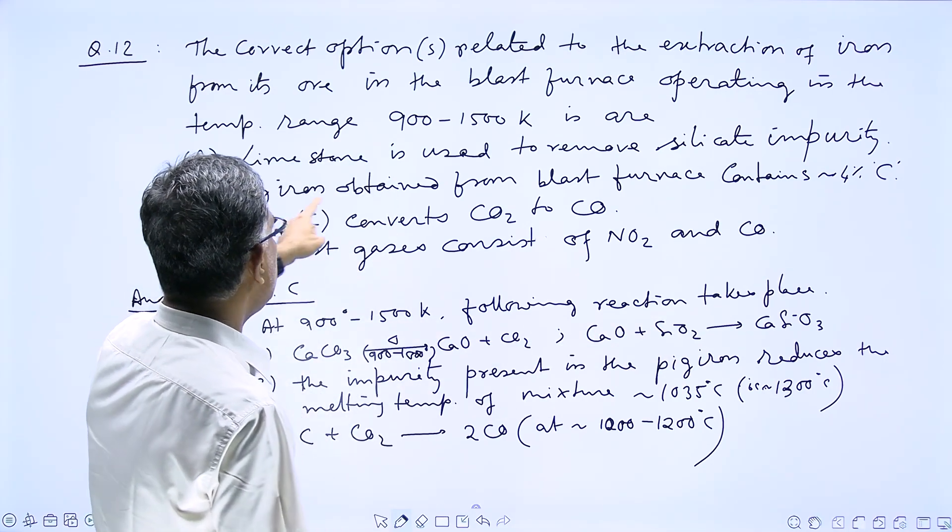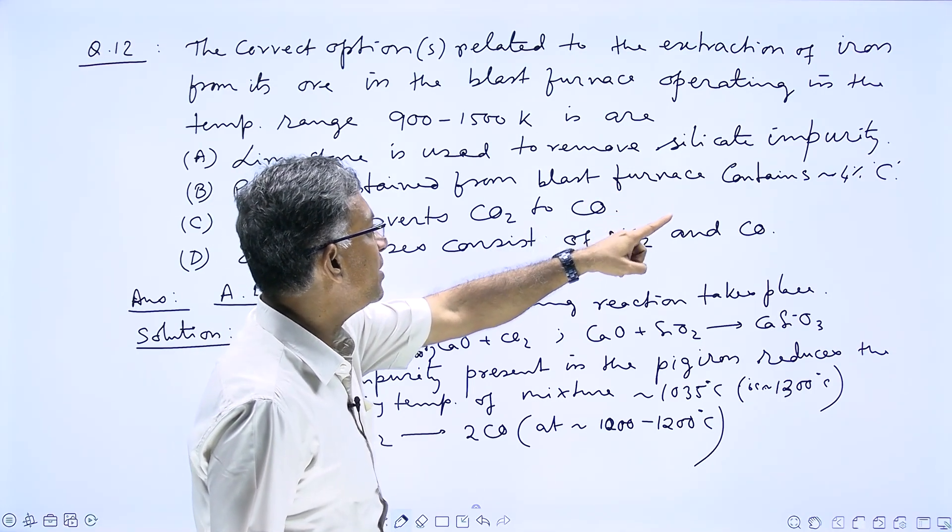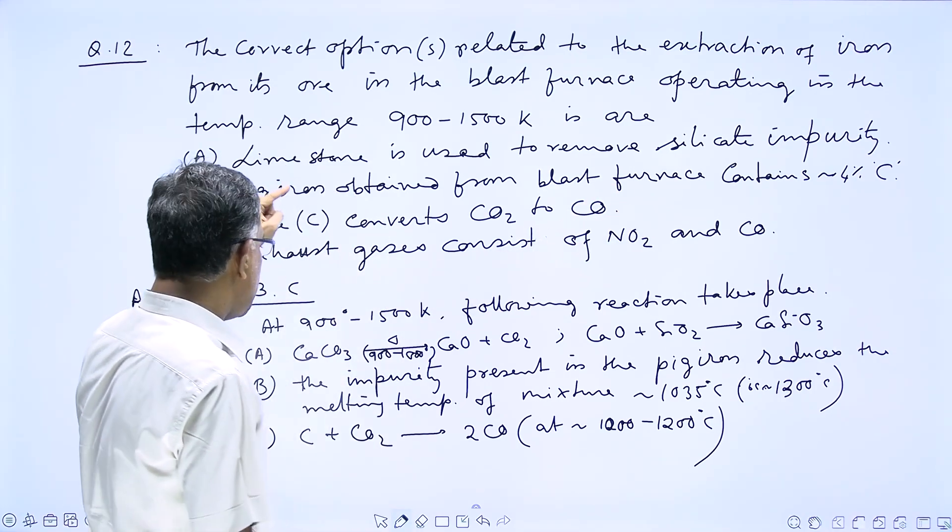And next, option B: Pig iron obtained from the blast furnace contains approximately 4% carbon. And this is pig iron.